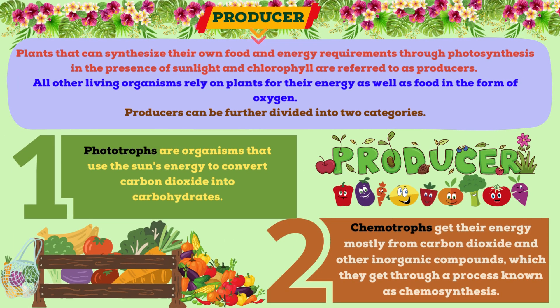Producers are plants that can synthesize their own food and energy requirements through photosynthesis in the presence of sunlight and chlorophyll. All other living organisms rely on plants for their energy as well as food in the form of oxygen. Producers can be further divided into phototrophs and chemotrophs. Phototrophs use the sun's energy to convert carbon dioxide into carbohydrates, while chemotrophs get their energy from carbon dioxide and other inorganic compounds through a process known as chemosynthesis.